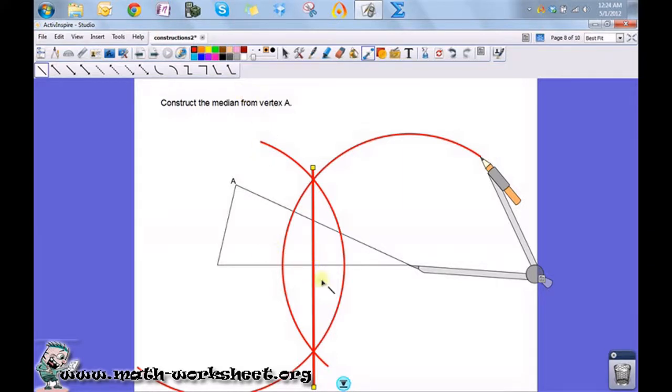So if I want to find the median, let's do it in green. I just draw a line segment from this point to the vertex A. So that green line there is the median.